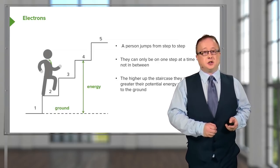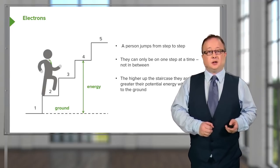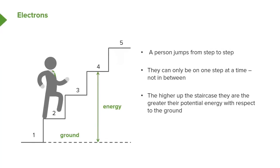To use an analogy of electrons and quantization of energy, take the example of a staircase shown on the board. A person moves from one step to the other but can only be on one step at a time. The higher up the staircase they are, the greater the amount of potential energy they have — potential energy equals mass times gravity times height. Also, you can only move one step at a time. Movement from step four to step two is forbidden, but movement from three to two is allowed. So movement of a person up or down a single step is permitted, but more than that is not.